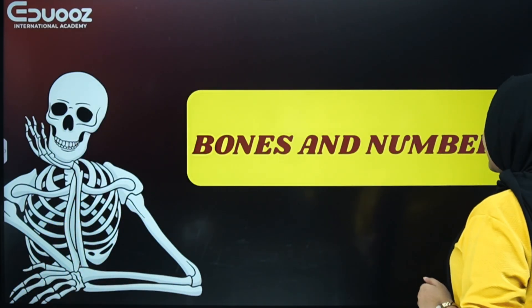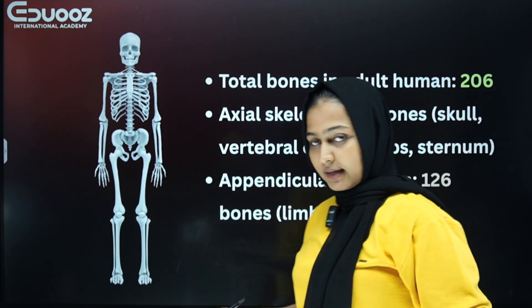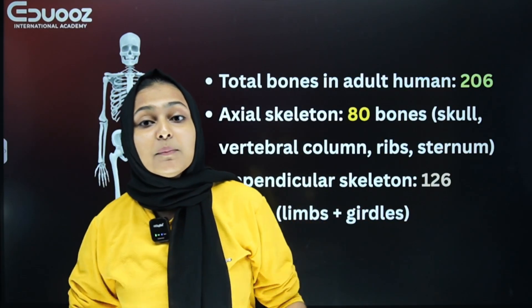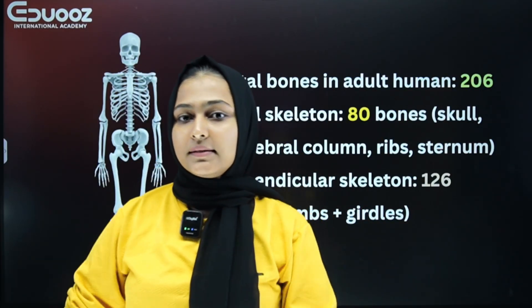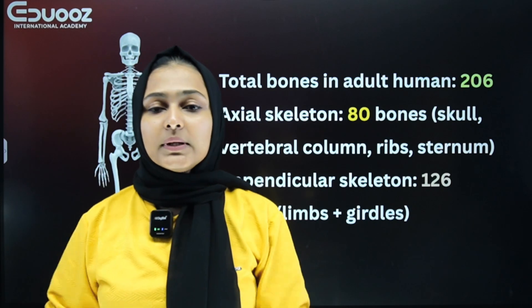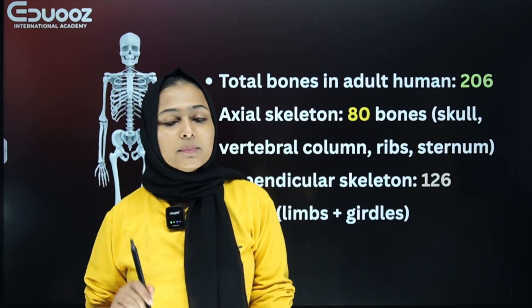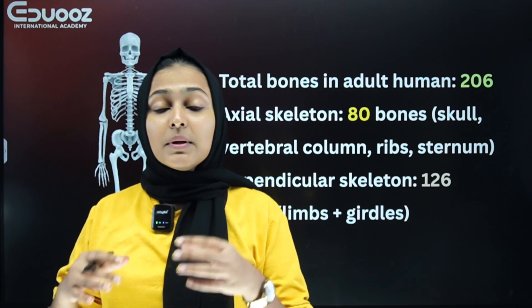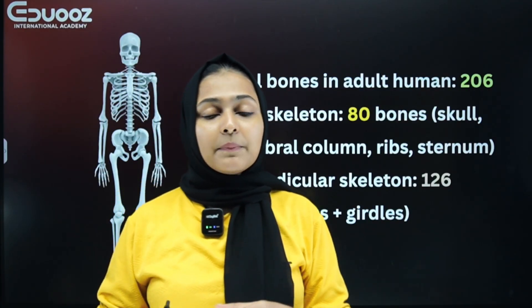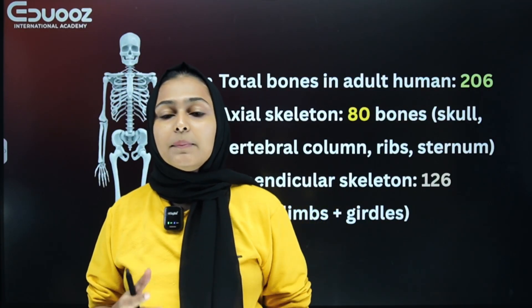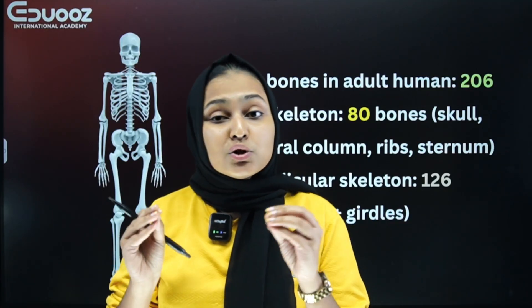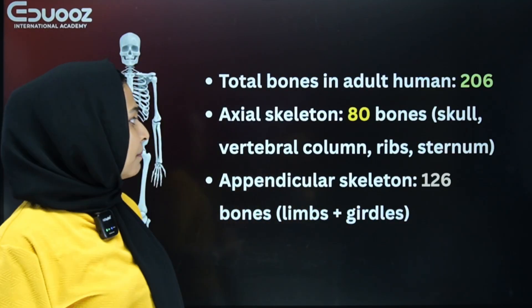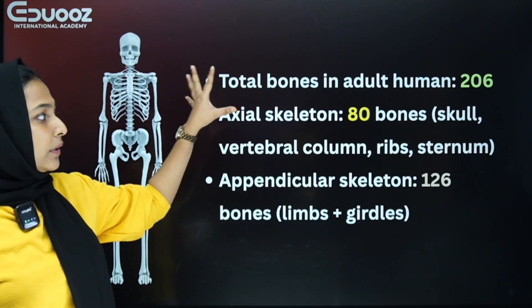If you want to look at details, bones are mainly categorized by our skeletal system. The total number of bones is 206. When we are young, we have 300 bones. As we age, some fuse, and we end up with 206 bones in adulthood.